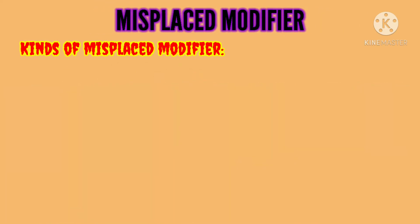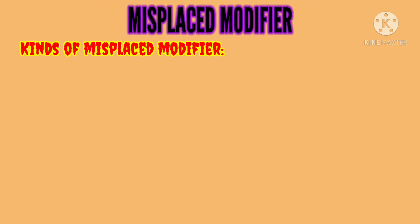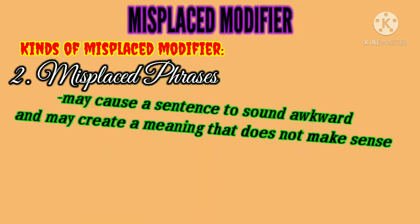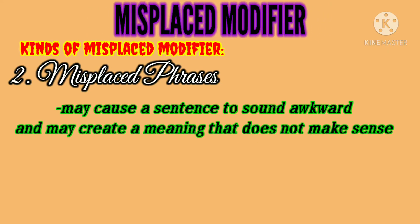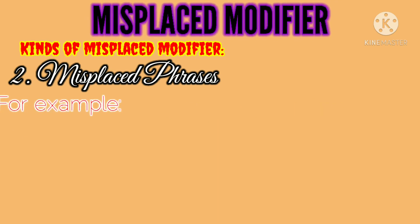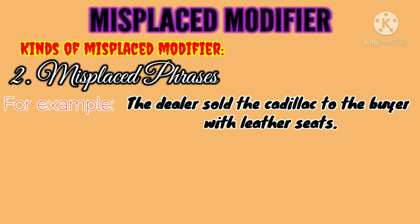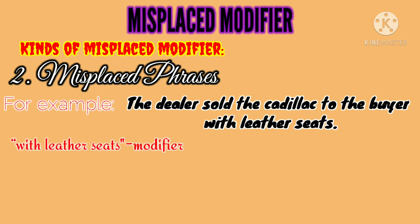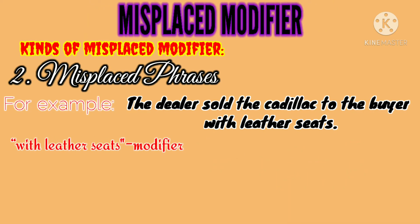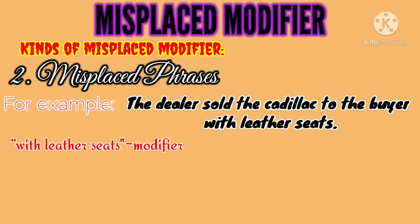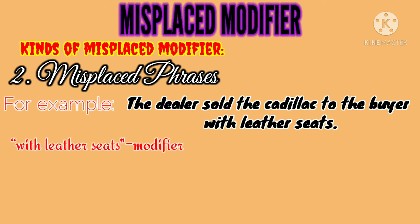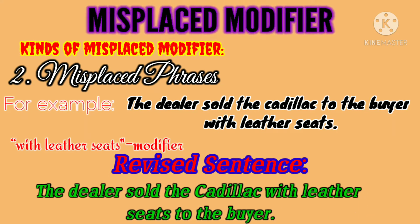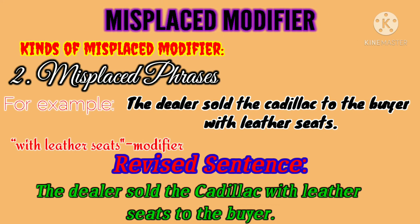The second kind of misplaced modifier is misplaced phrases. Misplaced phrases may cause a sentence to sound awkward and may create a meaning that does not make sense. For example: 'The dealer sold the Cadillac to the buyer with leather seats.' The phrase 'with leather seats' modifies the wrong noun — 'buyer.' To correct it, put the phrase next to 'Cadillac': 'The dealer sold the Cadillac with leather seats to the buyer.'